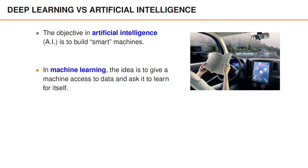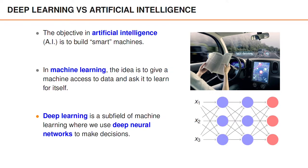Machine learning is currently the most popular approach to artificial intelligence. Deep learning is a subfield of machine learning, where deep neural networks, often with millions of parameters, are used to represent functions and thus to make decisions. In fact, most of the artificial intelligence systems that you've heard about in the media are using deep learning.